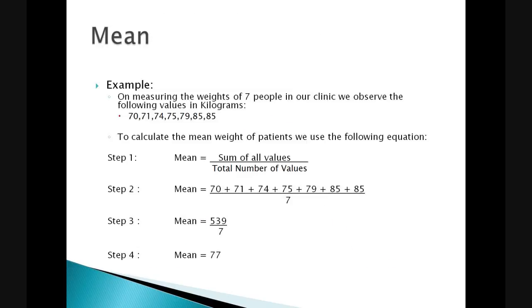Let's now consider an example. We want to measure the weight of seven people in our clinic and we observe the following values in kilograms: 70, 71, 74, 75, 79 and two patients with a weight of 85. In order to calculate the average weight of the patients, we must use the following equation. The mean is equal to the sum of all the values divided by the total number of values. Therefore, we add 70 to 71 to 74, etc. and divide it by the total number of values, which is 7 in this case. This is equal to 539 divided by 7, which gives us a mean value of 77.